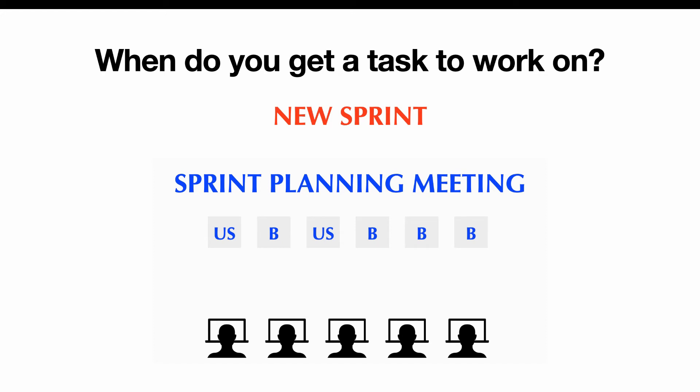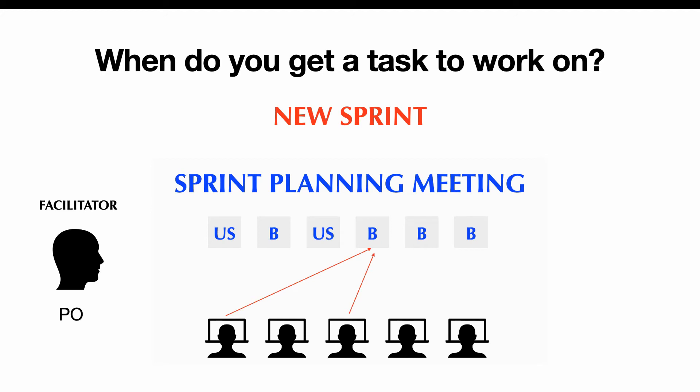In the sprint planning meeting, you'll have all the user stories and bug tasks, and it's usually facilitated by the PO. They will introduce the tasks they want worked on in the sprint. Developers will see the tasks that interest them and start choosing. If two developers pick the same task, they'll have a discussion and eventually only one will get it. Once the meeting is finished, everyone is assigned a task and everyone is happy.